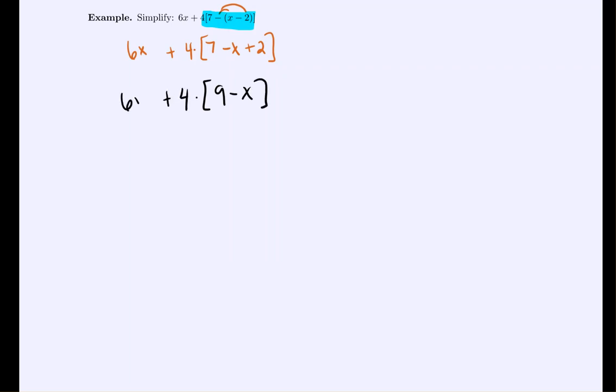And now that I've simplified the interior, it's going to be a lot easier whenever I distribute the 4 throughout. I could have distributed the 4 at this moment, but the likelihood of a mistake using that method would be significantly higher. So simplify the interior first. That's dealing with the parentheses part of order of operations. 4 goes to each term, so we get 36 minus 4x.